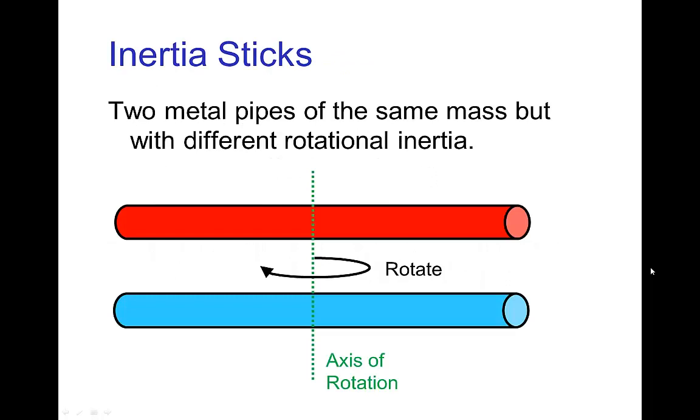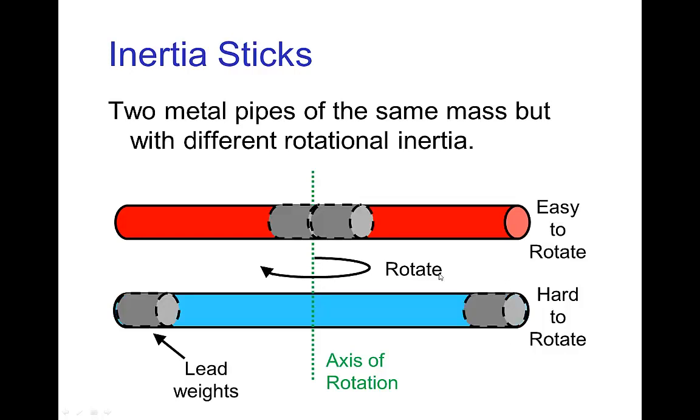Let's start with this example. I have these pipes and the two pipes have the same mass. If you weigh them, they weigh the same, but they have different rotational inertia. The red pipe is easy to rotate, the blue pipe takes a lot of torque to rotate it. The trick is that these pipes, the red one which is easy to rotate, has lead weights positioned near the center. And the one that's hard to rotate has the same weights, but they're clamped near the ends.